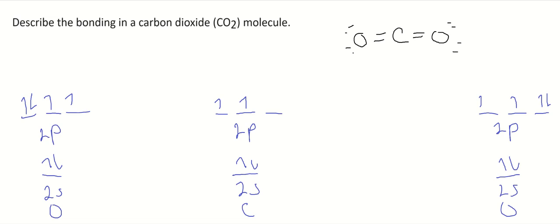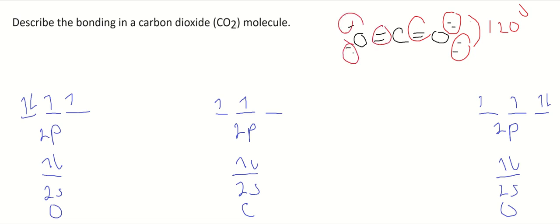Let's take a look at VSEPR. Oxygen here has three electron domains, or three effective pairs, so the bond angle there is 120 degrees. You can do the same thing on the other oxygen on the other side — that's 120 degrees. It's trigonal planar.